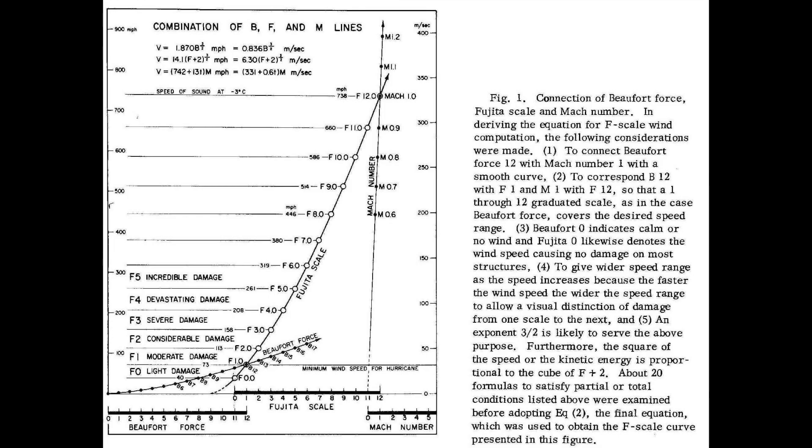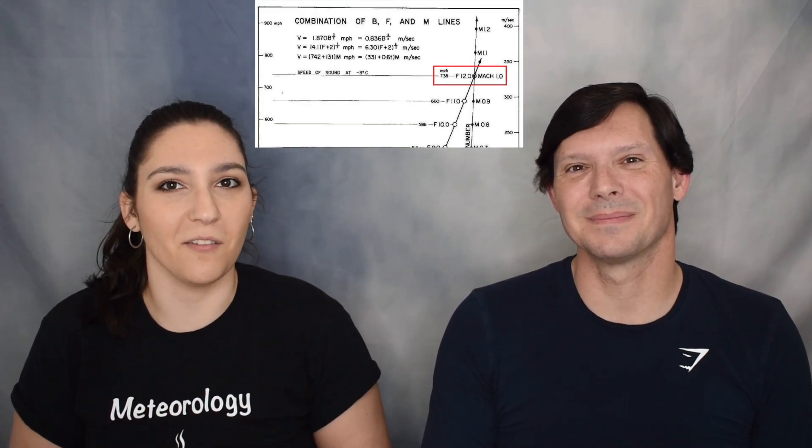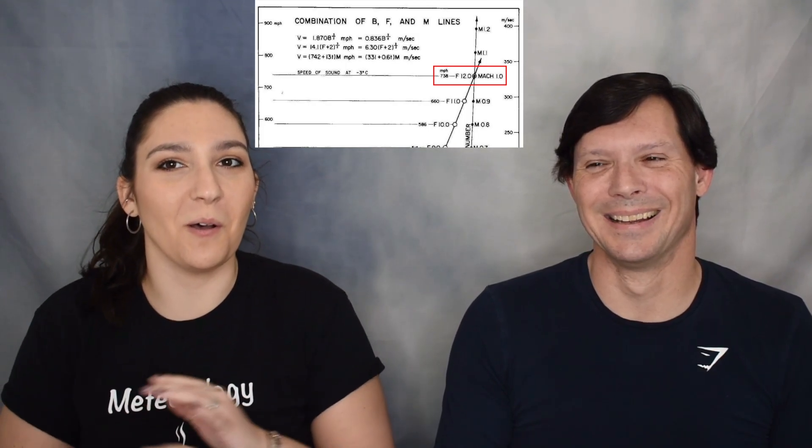Looking at that graph, you might notice that Mach 1 is the equivalent of an F12 tornado. So all those movies where they say 'we have an F6 or F10 or F12 tornado' — that means the tornado would be going around 800 to 900 miles per hour. That really discredits Hollywood. Maybe they misinterpreted the scale, but there you have it — the association of the F scale with the Beaufort and Mach scales.